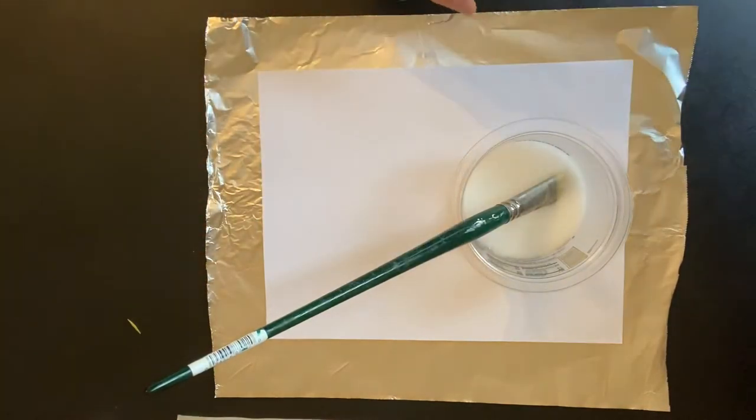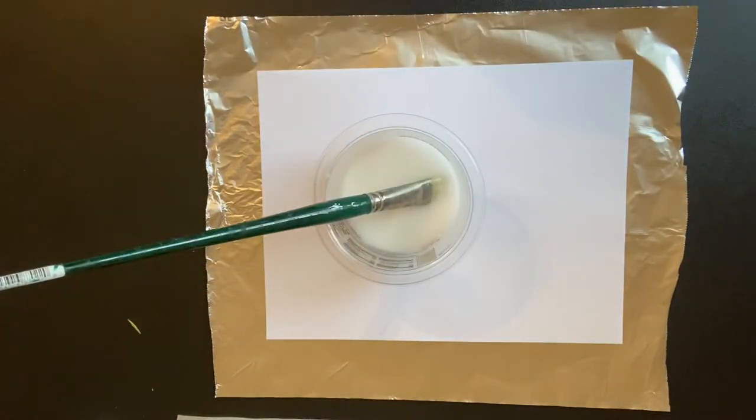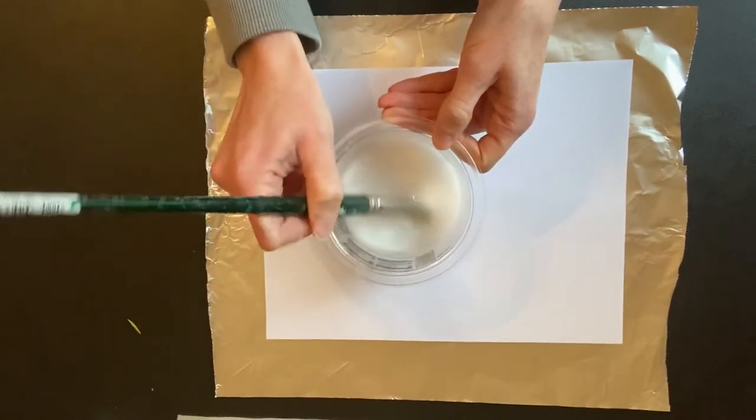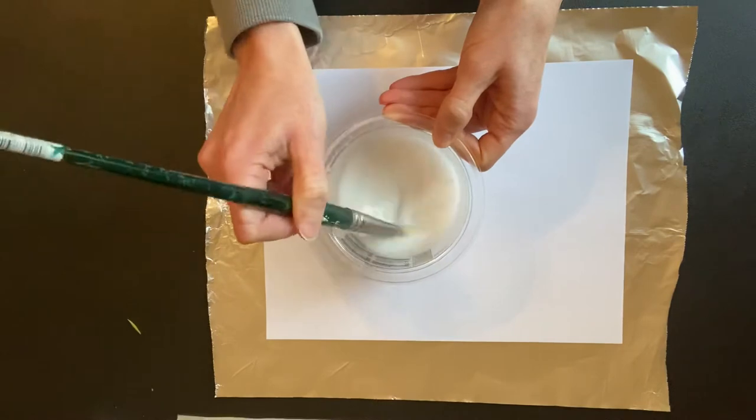And then you want to mix it with water. And the mixture is probably 40% glue, 60% water, so that it has the consistency of milk.